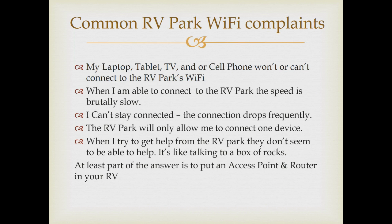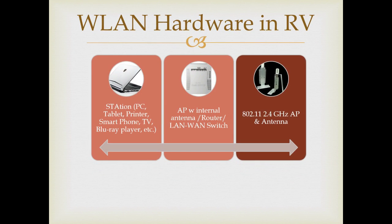A big part of the solution to these problems is to put an access point and a router in your RV. What you've done by adding an access point and router inside the RV is created a wireless LAN so that all of your station devices are connected within your own local area network. The access point within your RV appears to the campground access point as though it were a single station device requiring a single IP address, which resolves the issue where campgrounds will only assign you a single IP address. The access point in your coach mirrors the functionality of a station device, including being able to utilize adaptive power level.